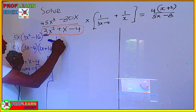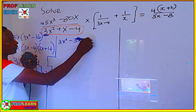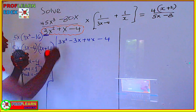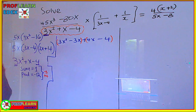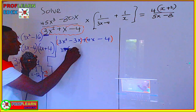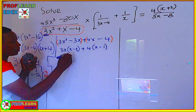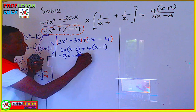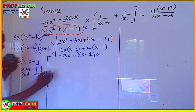So to factorize, we rewrite as 3x squared minus 3x plus 4x minus 4. We group the first two terms and factor out 3x, leaving x minus 1, and from the second pair we factor out 4, also leaving x minus 1. Therefore the factorized form of the denominator is (3x plus 4)(x minus 1).